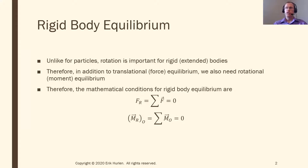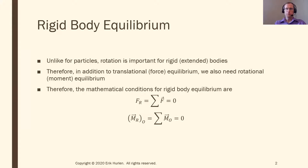Rigid body equilibrium is very similar to particle equilibrium. The difference is that a particle was just one single point, so I don't care about rotation. Rigid body equilibrium assumes an extended body with a definite shape and definite volume. Where I apply those forces matters — if I apply a force to one side of the pencil it goes one way, the other side causes a different rotation. That is what rigid body equilibrium is.